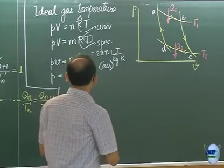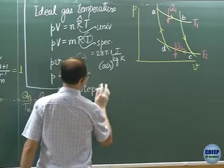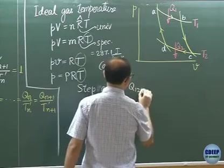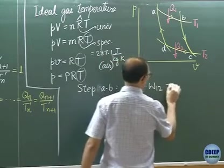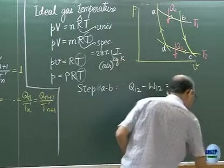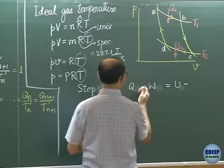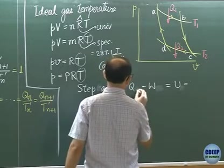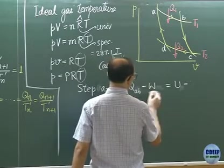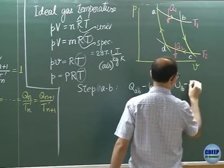We had written down that, let us say for step a to b, we had Q a,b minus W a,b equal to ub minus ua. Your notes would have 1, 2, but I am going to switch to a and b, keeping T1, T2 and Q1, Q2 separate. So, the heat exchange during process a,b minus the work interaction W a,b is ub minus ua. The right hand side was 0 because the temperature is constant across this step.